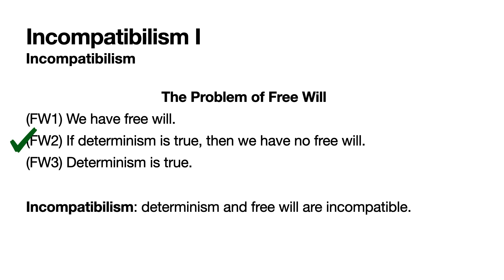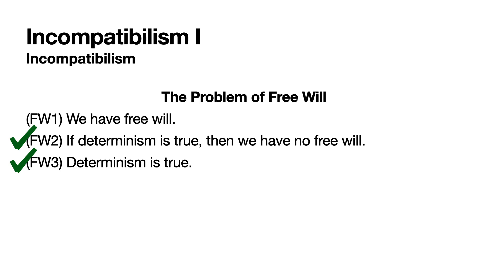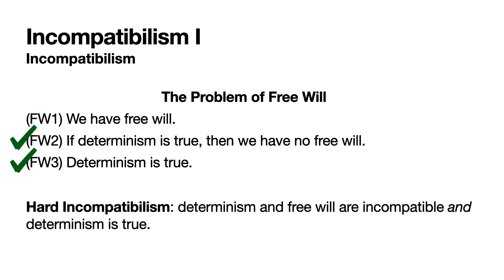That alone doesn't give someone a solution to the problem of free will — that's just the beginning, because you can't accept all three. So depending on which of FW1 or FW3 the incompatibilist rejects, they'll get a different version. Libertarian incompatibilists accept FW2, then add that we definitely have free will, and so reject that determinism is true. On the other hand, some incompatibilists accept that determinism is true and conclude we don't have free will — called hard incompatibilism, sometimes hard determinism: the no free will view.